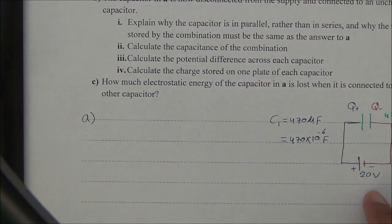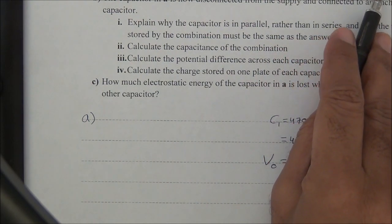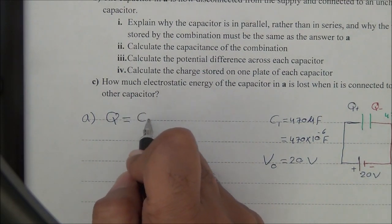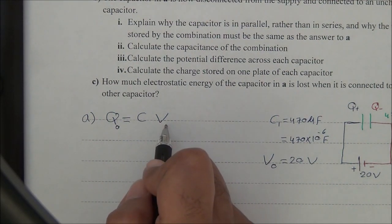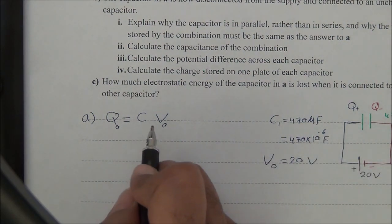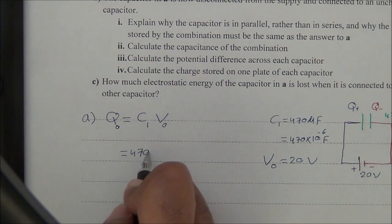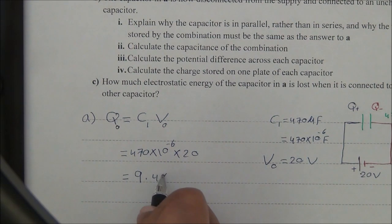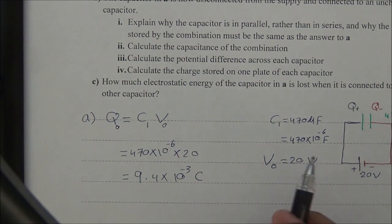We convert it to farads: 470 × 10⁻⁶ F. The voltage of the source is V₀ = 20 V. For part A, we calculate the charge using Q = C × V, so Q₀ = C1 × V₀ = 470 × 10⁻⁶ × 20 = 9.4 × 10⁻³ coulombs.